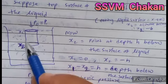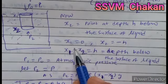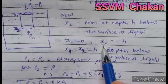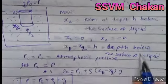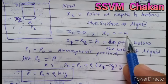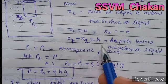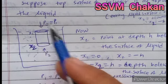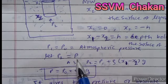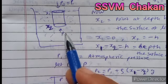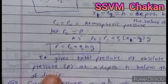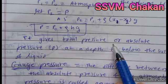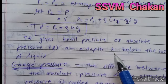For a point at depth h below the surface of a liquid, X1 = 0 and X2 = −h (going downward). So X1 − X2 = h. The pressure P0 is atmospheric pressure acting on the top surface. Substituting all values, P = P0 + ρhg. This gives the total pressure or absolute pressure at depth h below the surface.